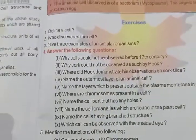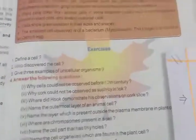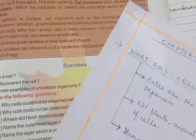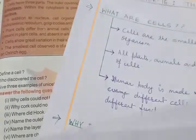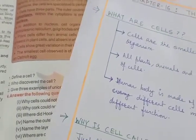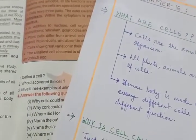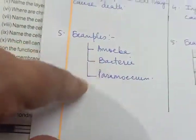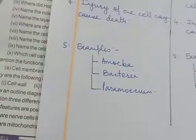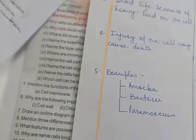Give three examples of unicellular organisms. When we discussed the difference between unicellular and multicellular organisms, I gave you three organisms: amoeba, bacteria, and paramecium. These are the examples of unicellular organisms.